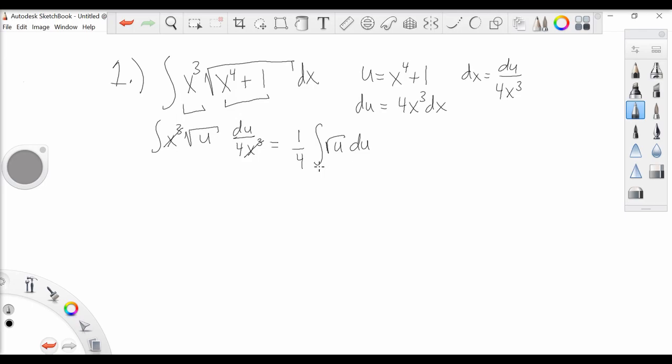We're able to bring that one-fourth out because it's a constant. Now, the square root of u is really u to the power one-half.